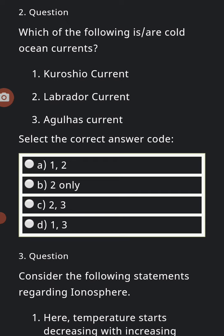The next question is: which one of the following are cold ocean currents? First statement is Canary current, second statement is Labrador current, the third statement is Agulhas current. Choose the correct code.